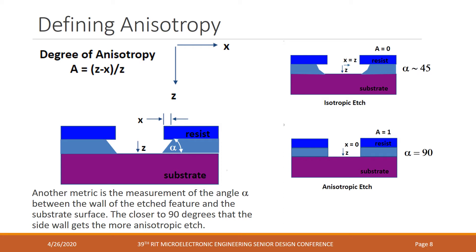Another metric is the measurement of the sidewall angle, shown as alpha, measured between the wall of the etch and the substrate surface. As this angle approaches 90 degrees, the feature becomes more anisotropically etched. As the sidewall angle gets smaller and the feature starts to look more like a trapezoid, the etch is considered more isotropic.